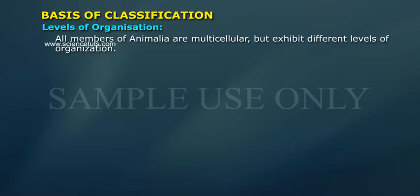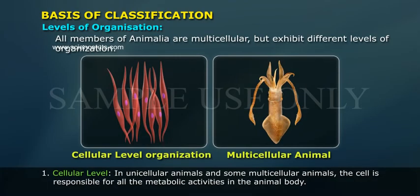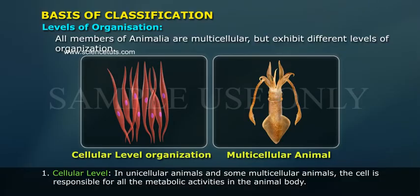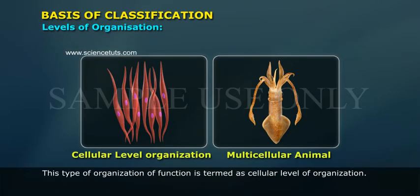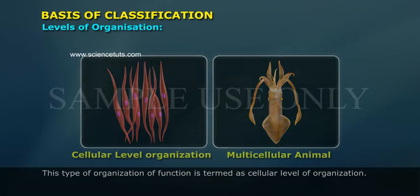All members of Animalia are multicellular but exhibit different levels of organization. In unicellular animals and some multicellular animals, the cell is responsible for all the metabolic activities in the animal body. This type of organization of function is termed as cellular level of organization.